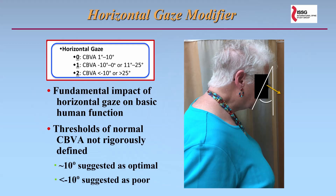The second modifier was the horizontal gaze modifier. The ability to maintain horizontal gaze is a very basic human function. At the time, normal values for chin-brow vertical angle were not rigorously defined, and so we had to use a Delphi approach in order to determine thresholds for this modifier.